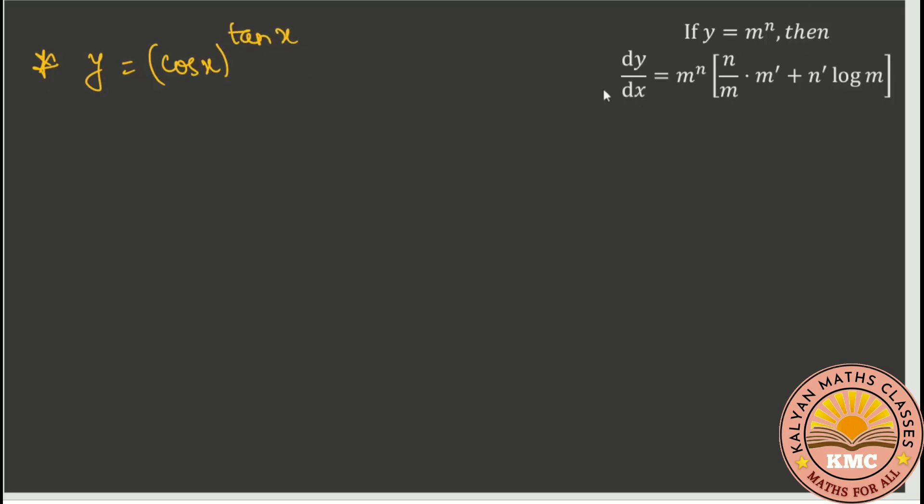So friends, using this formula in the same format, here m is cos x and n is tan x. So m dash is d by dx of cos x, which is minus sin x, and d by dx of tan x is secant squared x.